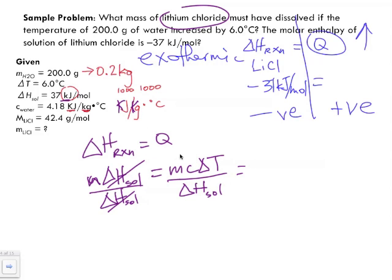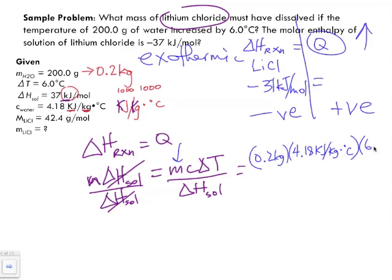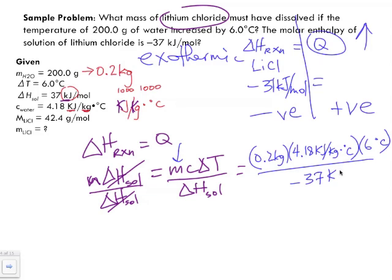Now substituting our numbers — the mass here is the mass of the water: 0.2 kilograms. Our c value, the specific heat capacity of water, is 4.18 kilojoules per kilogram degrees Celsius. Our change in temperature is 6 degrees Celsius, and we divide by negative 37 kilojoules per mole.